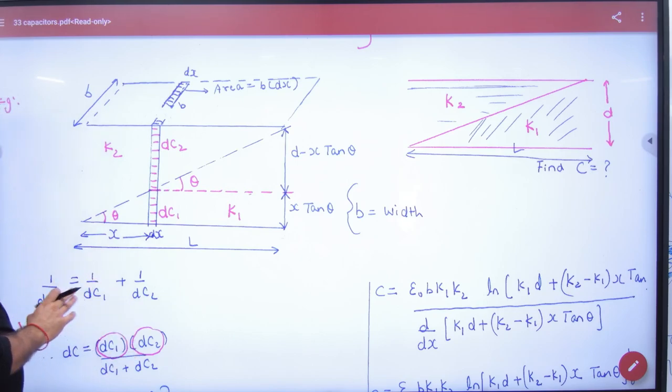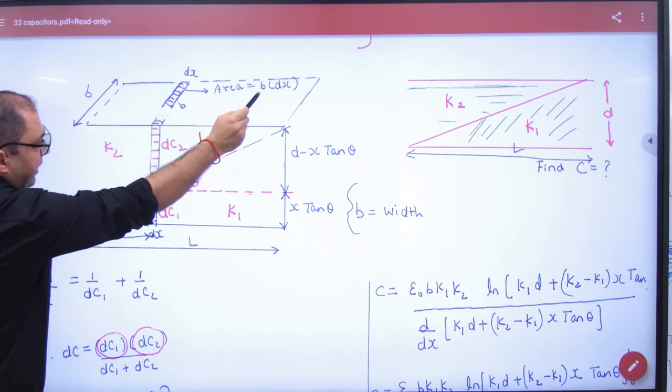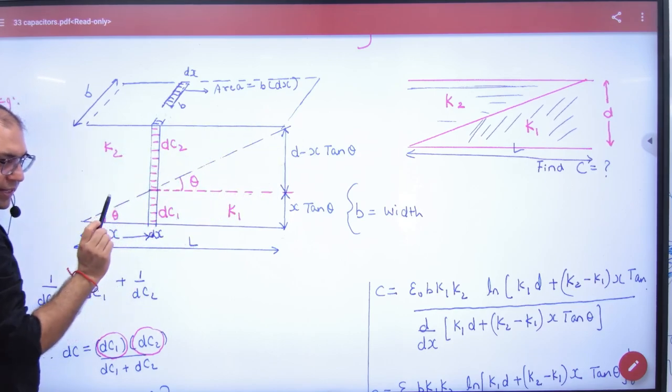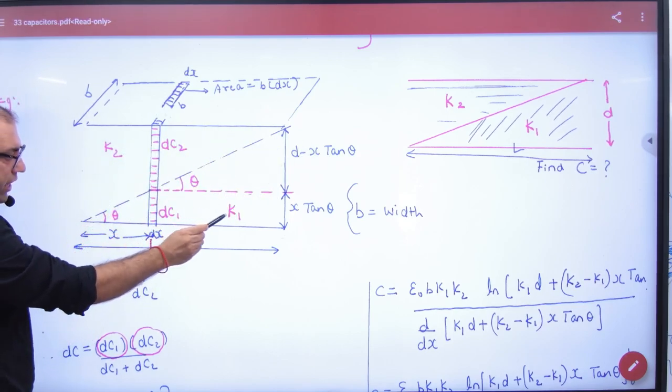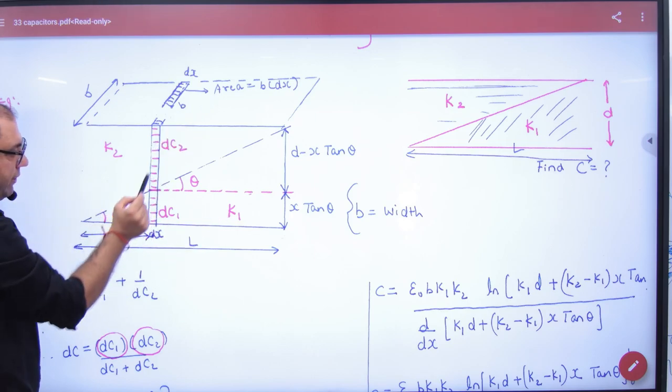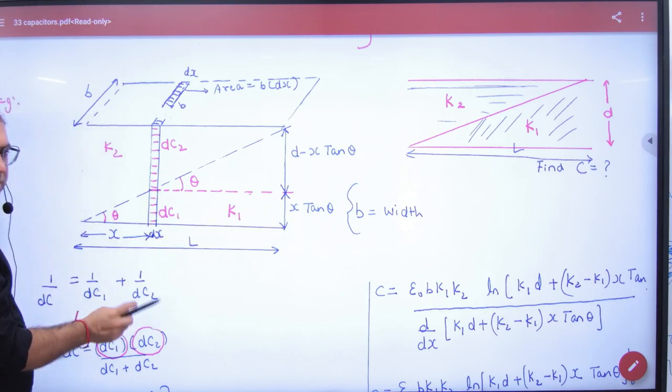So here, you will take dc2. dc2 will be K2 into epsilon_0, area, this area B dx divided by distance d minus x tan theta.